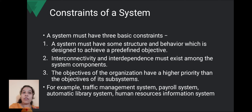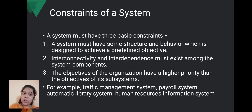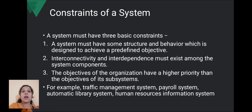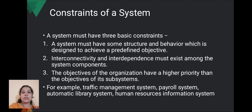Third, the objective of the organization must have higher priority than the objective of a subsystem. For example, the main objective is that the program is organized — that is the main objective. So the organization's objective should have higher priority than any subsystem's objective, such as whether the invitation was properly distributed. These are the three constraints — the rules which the system should follow.